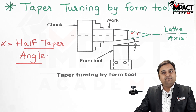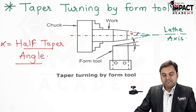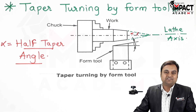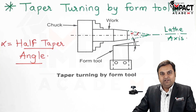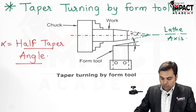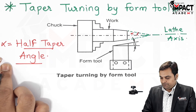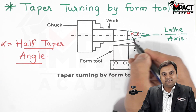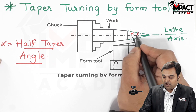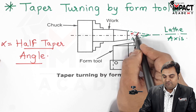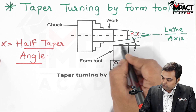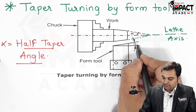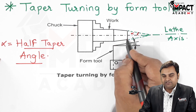For how to get this alpha, you can refer my video in which I had explained how to get the half taper angle, whose link would be provided in the description of this video below. Now, once this alpha value is known, by using the form tool — the form tool is also ground at the same angle as the half taper angle.